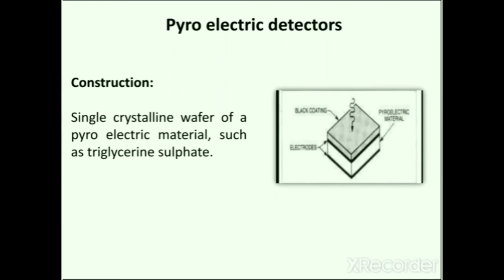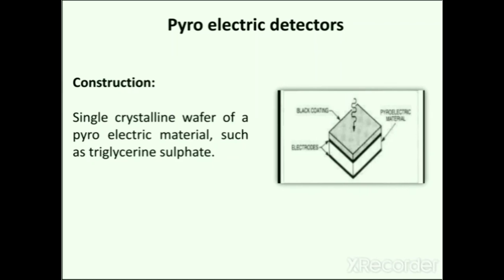Next is the pyroelectric detector, made up of a single crystalline wafer of a pyroelectric material such as triglycerine sulfate. Pyroelectric materials have the property of pyroelectricity — the ability to generate a temporary voltage when heated or cooled. Below the Curie temperature, pyroelectric materials exhibit electrical polarization. When radiation from the sample is incident upon this detector, the temperature is altered; because of this alteration, the polarization changes, which is observed as an electrical signal.